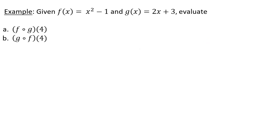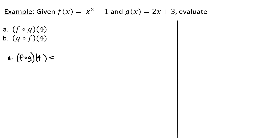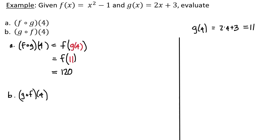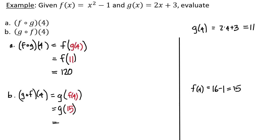Given f of x equals x squared minus 1 and g of x equals 2x plus 3, evaluate f composed with g at 4, and g composed with f at 4. For f composed with g at 4: g of 4 is 2 times 4 plus 3, which equals 11, then f of 11 is 121 minus 1, which is 120. For g composed with f at 4: f of 4 is 16 minus 1, which is 15, then g of 15 is 2 times 15 plus 3, which is 33.